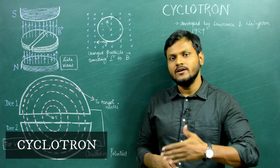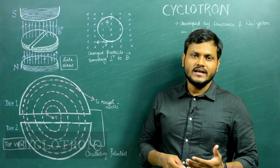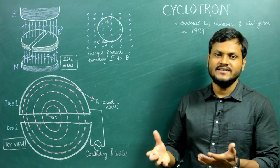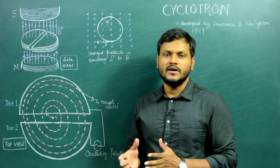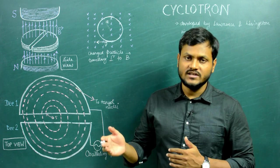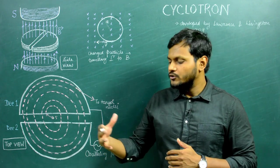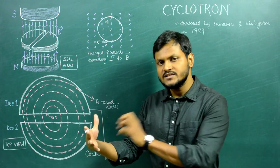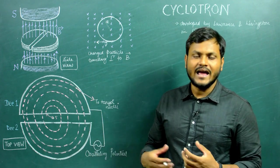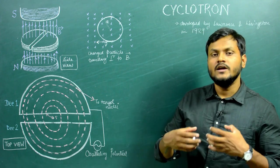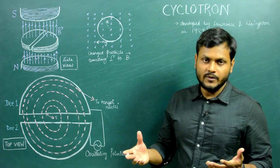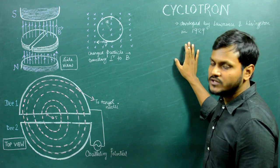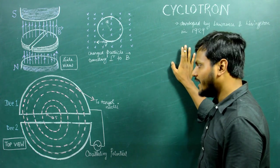So what is a cyclotron? The cyclotron is a specific kind of particle accelerator that can accelerate charged particles to very high velocities, so that those charged particles can then be used to bombard onto some target nucleus to induce some sort of a nuclear reaction or perform some kind of a nuclear experiment. The first ever cyclotron was developed by Lawrence and Livingston in 1929.